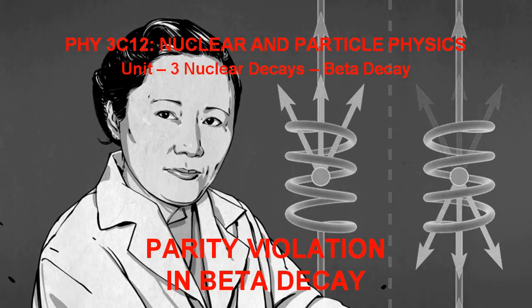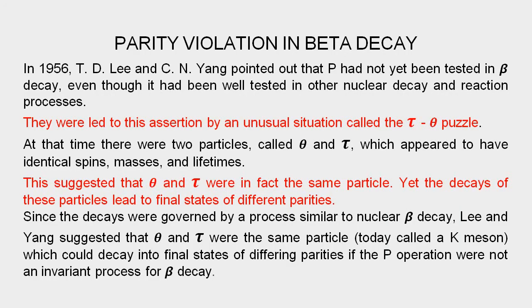In this class, we will discuss the parity violation in beta decay. Wu is the main one among those who performed the experiment to prove that parity is violated in beta decay. We have already discussed the concept of Li and Yang — parity is not conserved in beta decay.